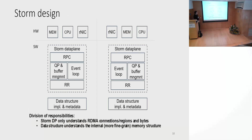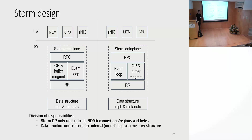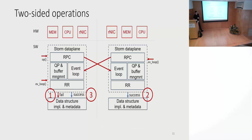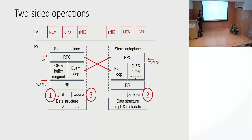This is the design of STORM. We have a data plane that doesn't understand the internals of any specific data structure — it only understands connections and memory bytes. Then we have the data structure implemented on top, which can also implement caching for data-structure-specific metadata. When the user issues a request for a specific item, we query the data structure to check if we know or can guess the address. If not, we resort to an RPC — the owner does the lookup and responds — and at the end we verify the data we read is what we wanted.